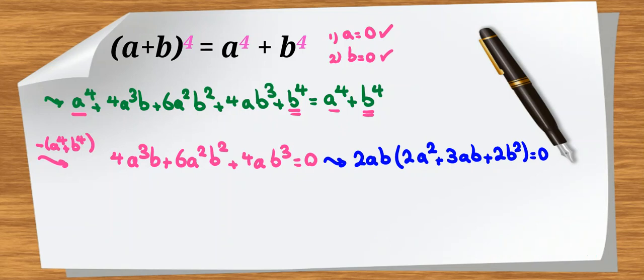And then here, as I said, we can consider apply 2 inside. From first, we could factor from ab. It will be 4a squared plus 6ab plus 4b squared equal to 0.